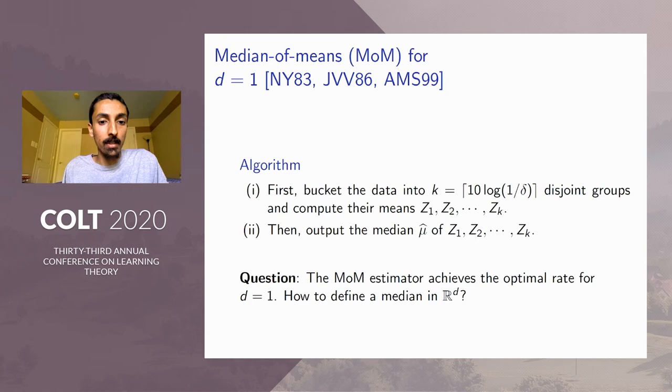So in the special case of one dimension, this has been rediscovered multiple times in the literature. The so-called median of means estimator indeed achieves sub-Gaussian performance under only assumption of two moments. So the algorithm works as follows. We basically bucket the data into k disjoint groups, so k will be proportional to log(1/δ).